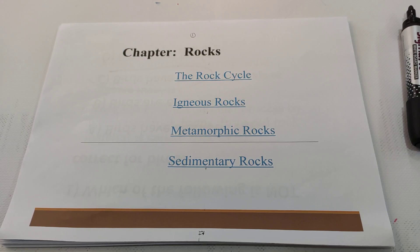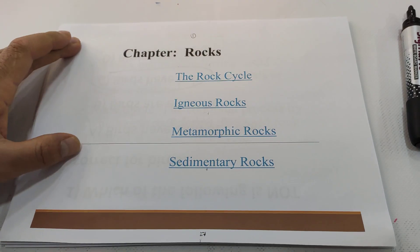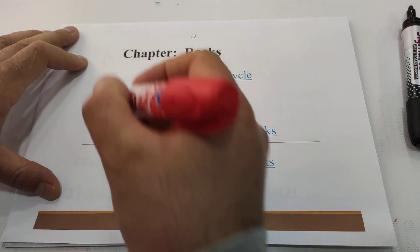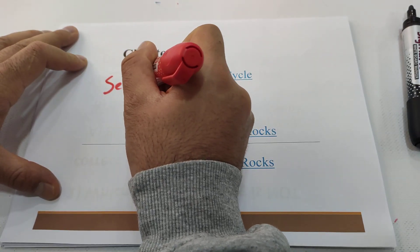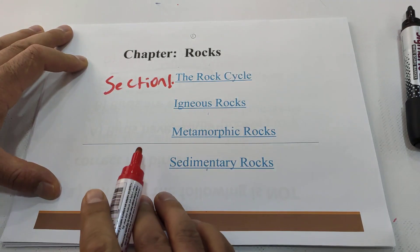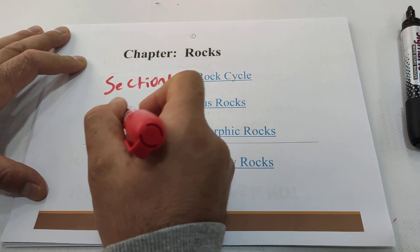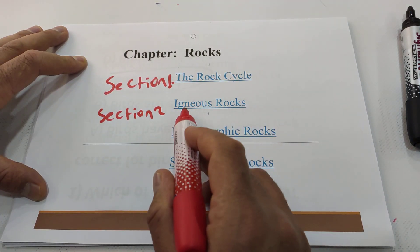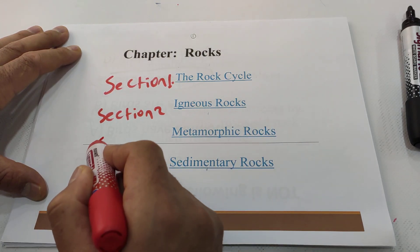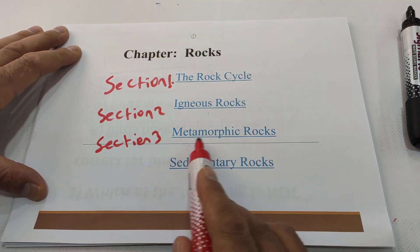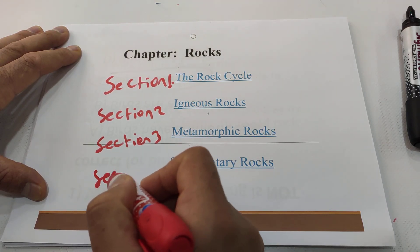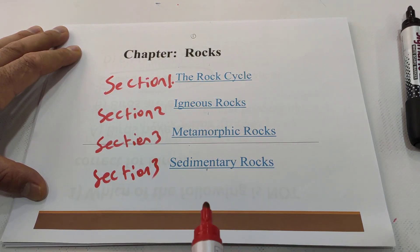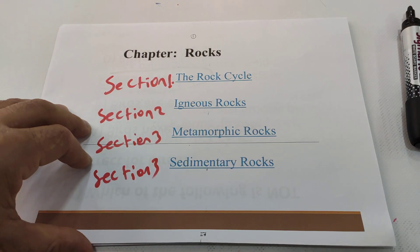Hi students, today our topic is rock. It is a bit long chapter but I will try to make it shorter for you. There are four sections in chapter six: section one, section two, section three, and section four. All right, let us start.